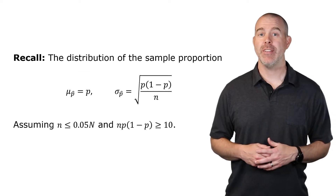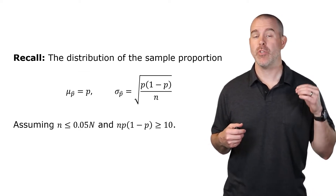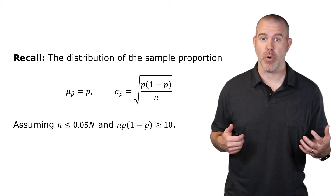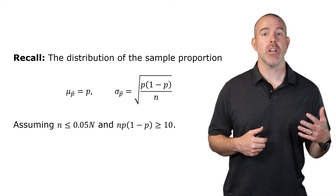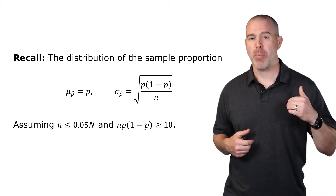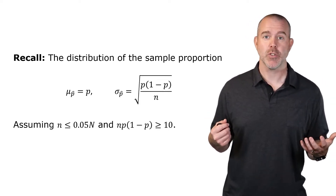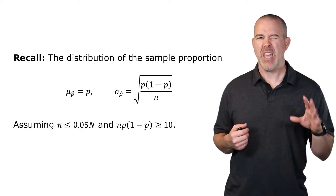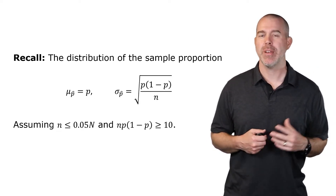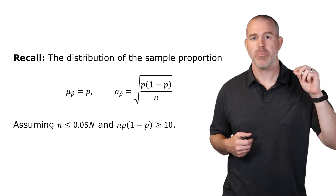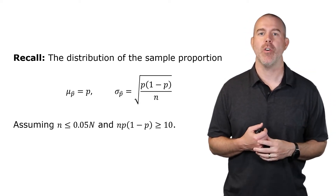The first thing we need to do today is remind ourselves of the distribution of the sample proportion. In general, the mean of the sample proportions should be the population proportion. The standard deviation is the square root of the population proportion times one minus that, all over n.